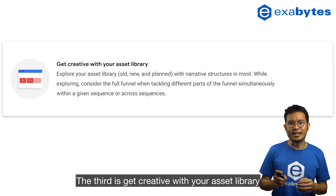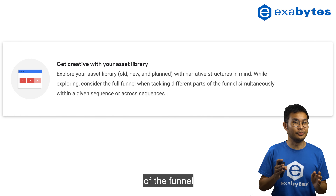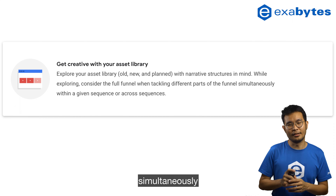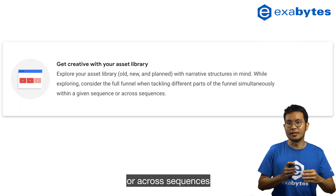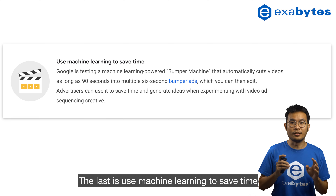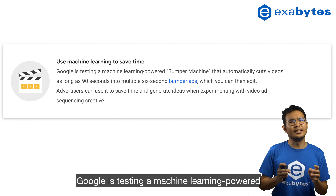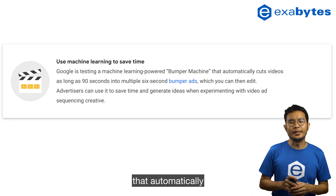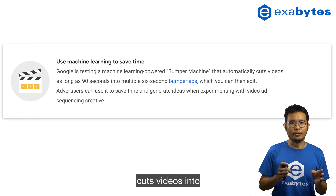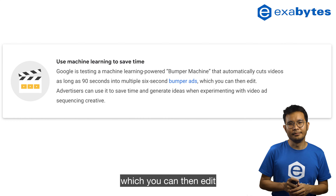The third takeaway is to get creative with your asset library. Consider the full funnel when tackling different parts of the funnel simultaneously, within a given sequence or across sequences. The last takeaway is to use machine learning to save time — Google is testing a machine learning-powered bumper machine that automatically cuts videos into 6-second bumper ads, which you can then edit.